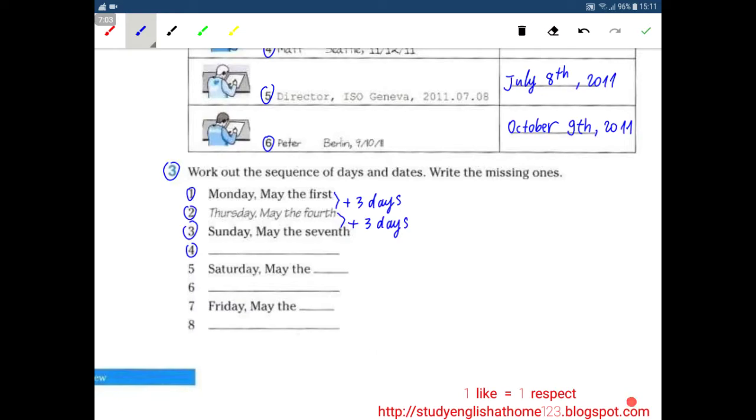Ok so the next we also plus 3 days. So number 4 will be Wednesday May the 10th. When is D, May the 10th. 5th, Saturday May the 13th.